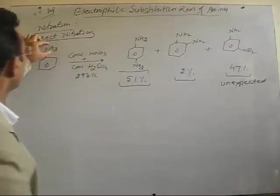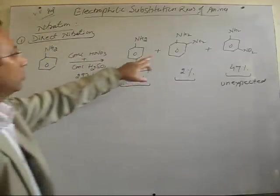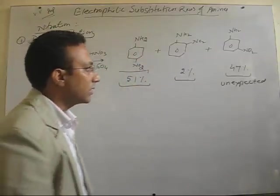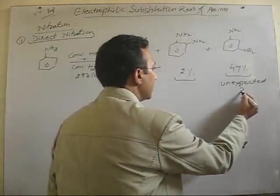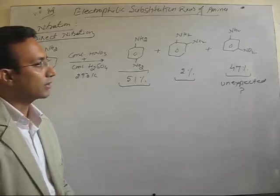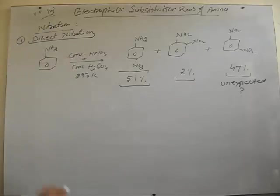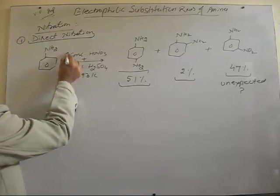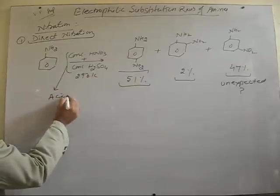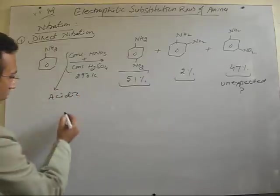Because NH2 group present on the ring is ortho and para directing in nature, the question arises: why do we get here a high percentage of meta nitro aniline in this case? So, if we discuss it, as we know, these two are very good, strong acids, so aniline is under acidic conditions.